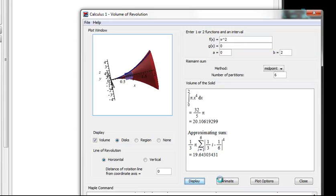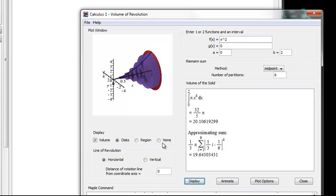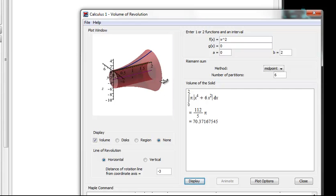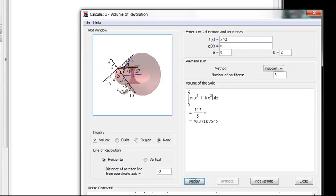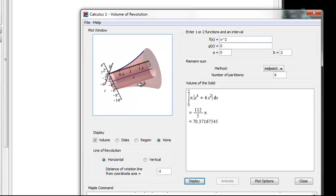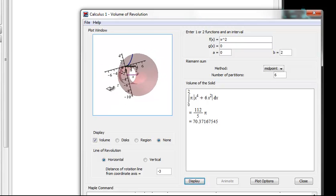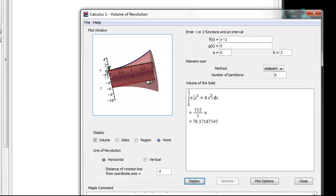If I change the axis of rotation to negative 3, you'll see that what happens is we actually get this sort of different looking object, and it looks like it has a hole in it instead. Okay, it's no longer pointy down here. It's just we can look down at this way if we wanted to.